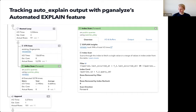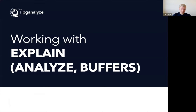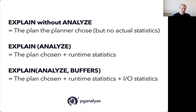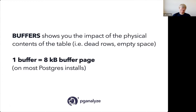Both in auto_explain and in regular EXPLAIN, we have EXPLAIN ANALYZE BUFFERS. EXPLAIN without ANALYZE just gives you the plan. EXPLAIN ANALYZE gives you the plan chosen and actual runtime statistics, like how many rows the plan returned. EXPLAIN ANALYZE BUFFERS additionally gives you I/O statistics. When we say buffers, we mean eight-kilobyte buffer pages — the same as shared_buffers in Postgres.